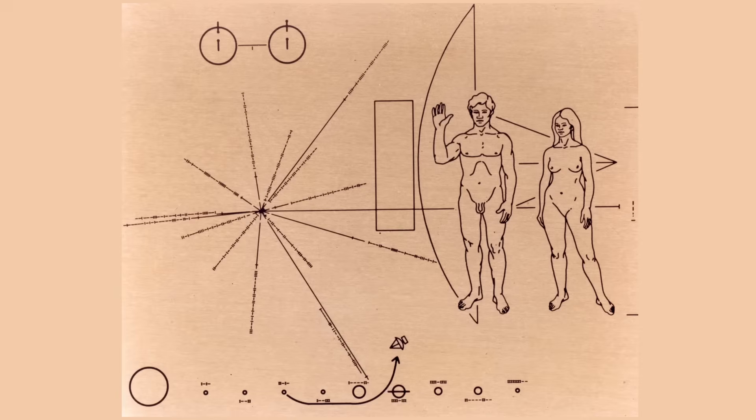If you had one message that you could send out to aliens, what would that message be? Well, in 1972, that's the exact dilemma that NASA scientists encountered. And this is what they came up with. This is the Pioneer plaque. And it's more than just a drawing.